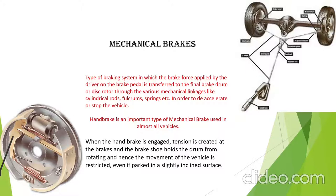The handbrake is an important type of mechanical brake used in almost all vehicles. The handbrake lever pulls a cable or pair of cables linked to the brakes by a set of small levers, pulleys, and guides, which vary greatly from car to car. A ratchet on the handbrake lever keeps the brake on once it is applied, and a push button disengages the ratchet and frees the lever. When the handbrake is engaged, tension is created at the brakes and the brake shoes hold the drum from rotating, restricting the movement of the vehicle even if parked on an inclined surface.